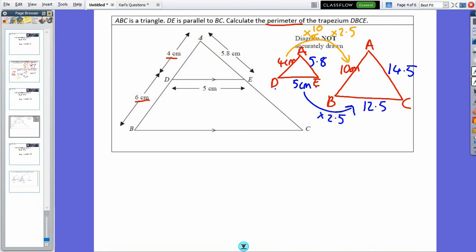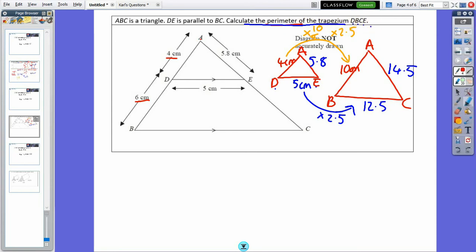This is where you need to be careful. I want the perimeter of the trapezium DBCE. So that is the perimeter of D, B, C, E.